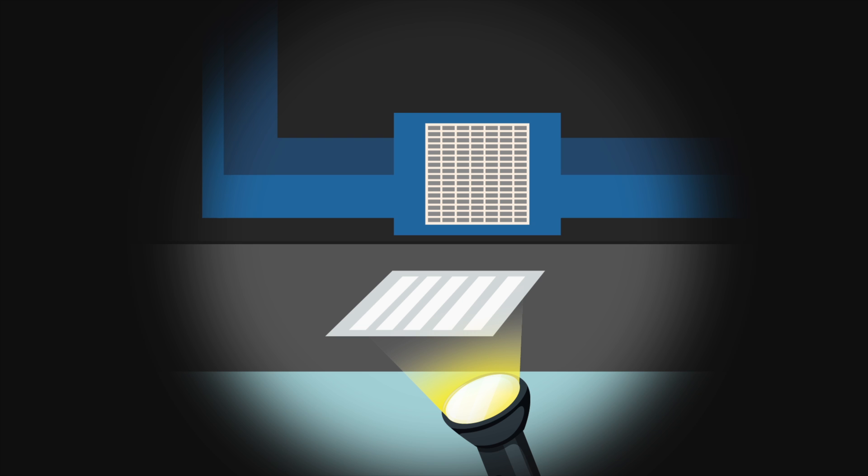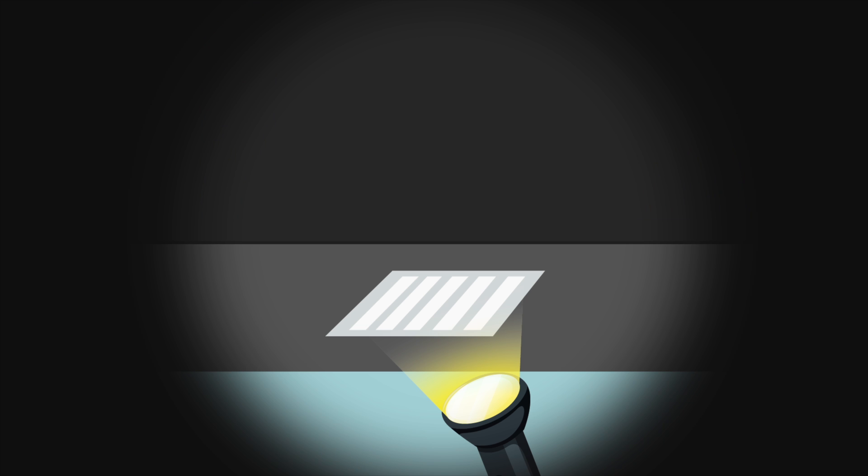You can easily check and see if a room you are in has a return plenum by shining a flashlight into the return air grill. If you see ductwork, it is not a return air plenum. However, if you see the floor deck or roof above you, it is a return air plenum.